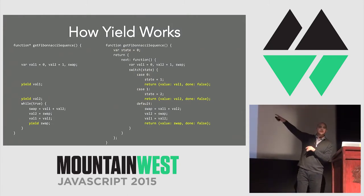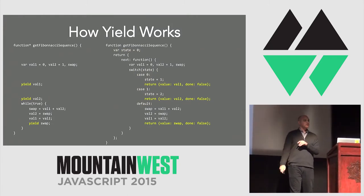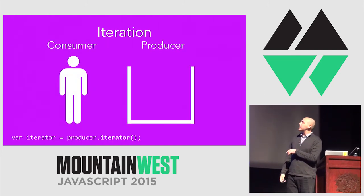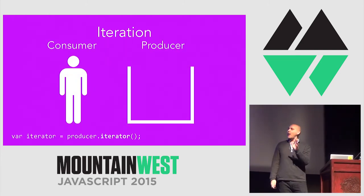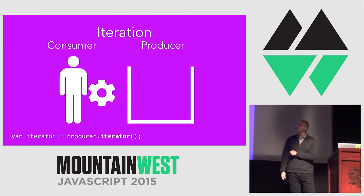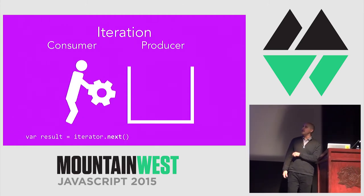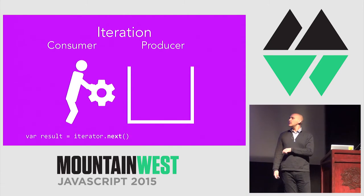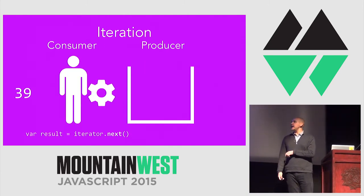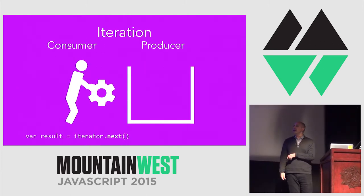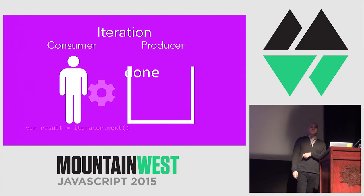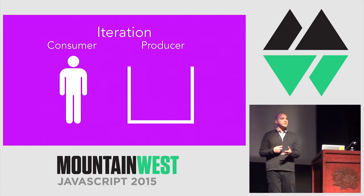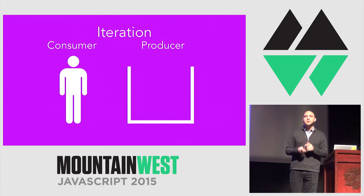Finally, we can see how the return values match up to the yields. Iteration works like this: a consumer requests an iterator from the producer and keeps pulling values out one at a time until it attempts to pull a value and gets a message that it's done and no more. You pull multiple values out of a function until you get an explicit completion message.